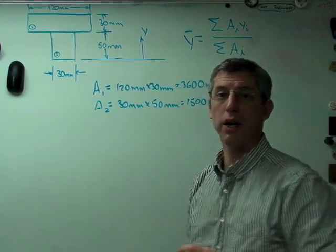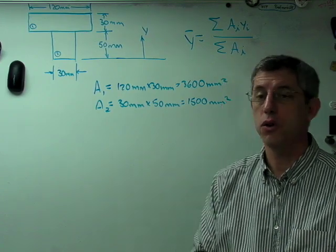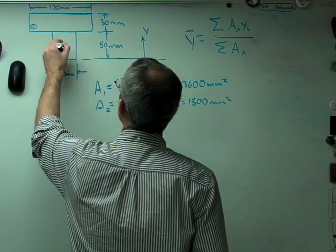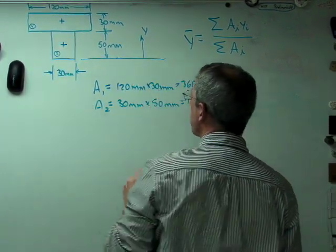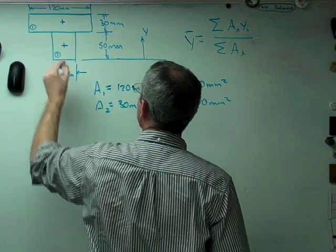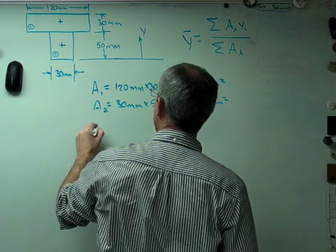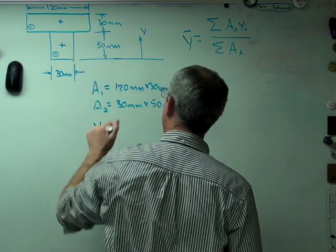Now, Yi, that term right there, represents the distance from the centroids of the individual boxes to this reference axis. That's pretty straightforward. Here's the centroid of box 2, centroid of box 1. If that's 50 millimeters and that's half of 30, then Y1, which is the distance from here to there, is 65 millimeters. That's 50 plus half of 30.